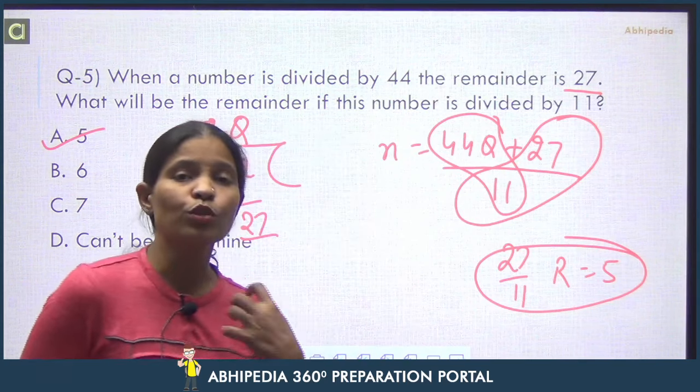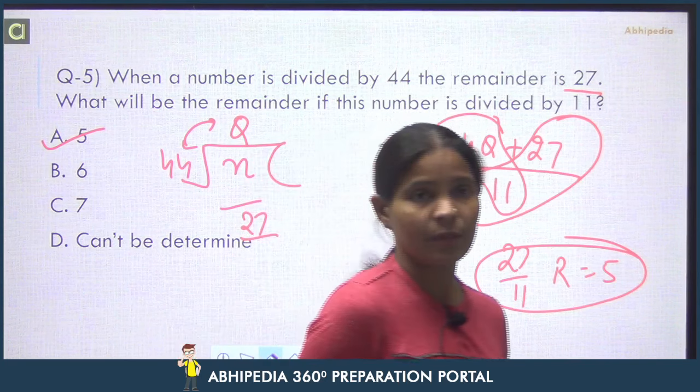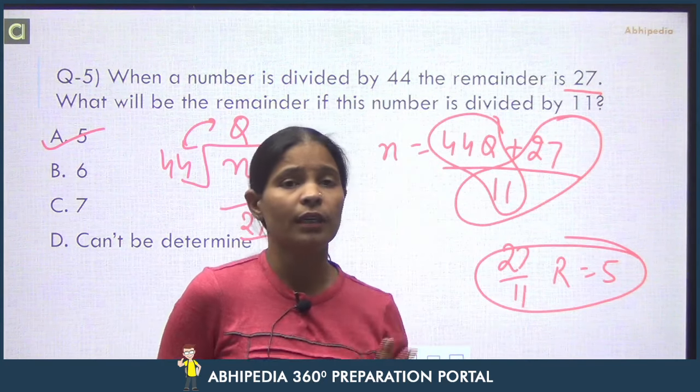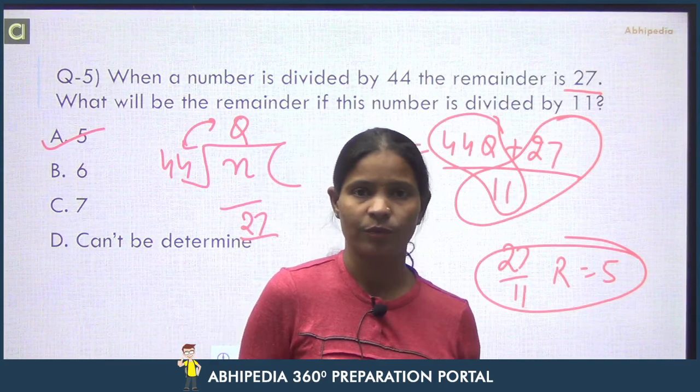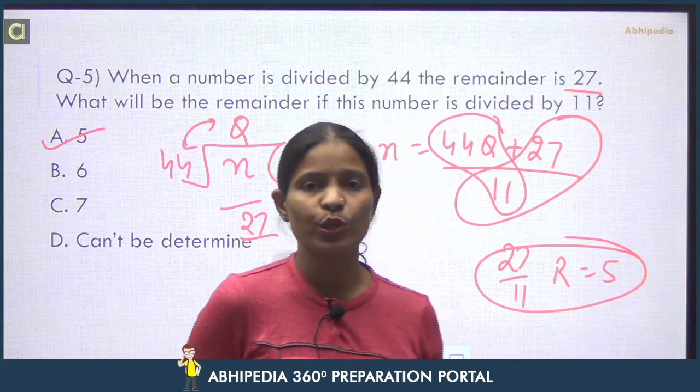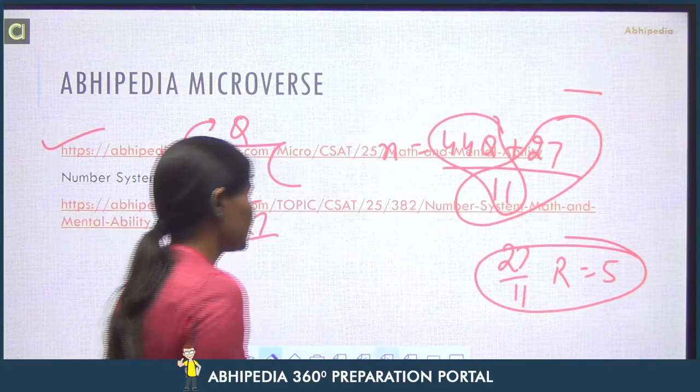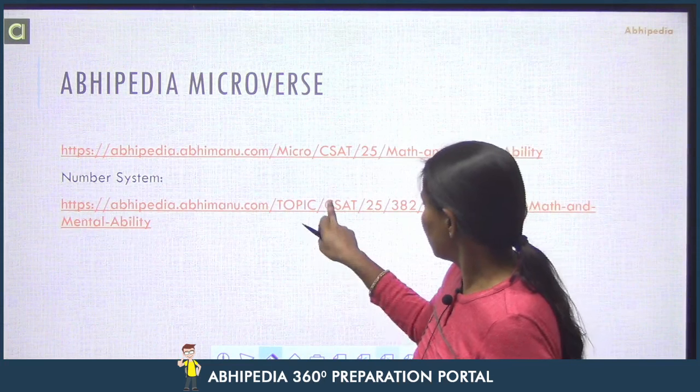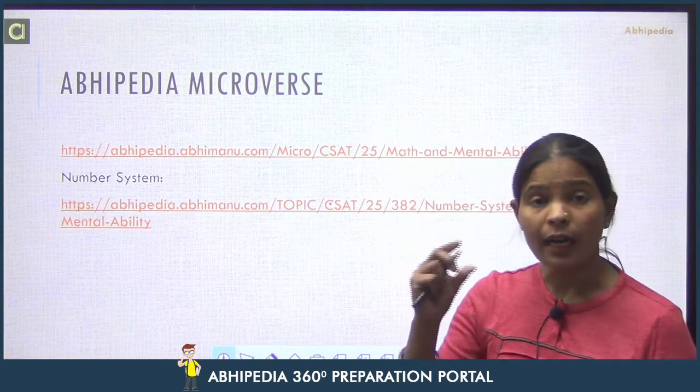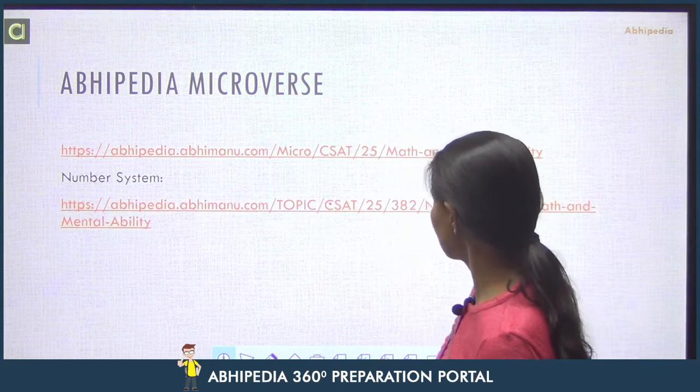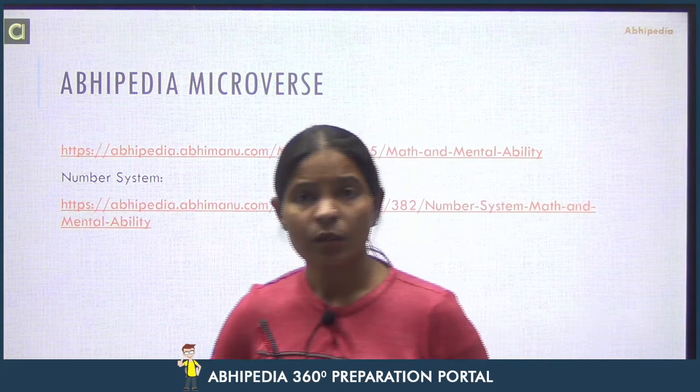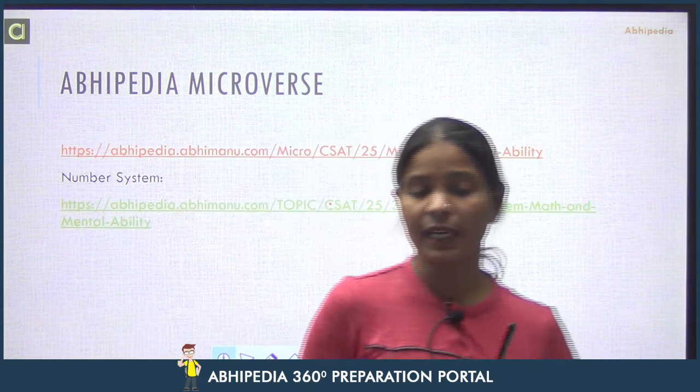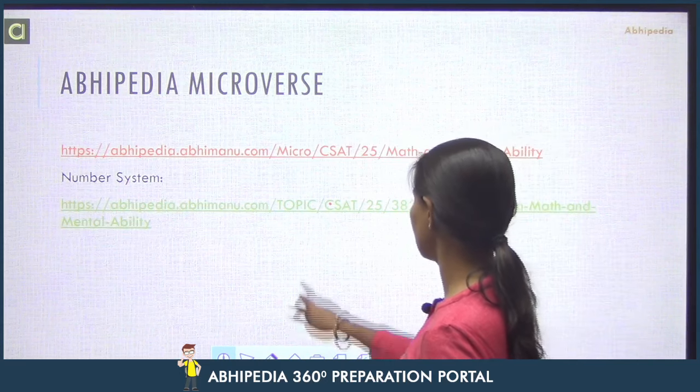Such questions are generally asked in the exam from Number System. We discussed some questions; next 5 questions will be in the next class. Now, we can only discuss some questions; practice is with you. If your concepts are clear, take any book where you get 300-400 questions on Number System and practice them. If you feel you're not getting solutions, you can go to our site where there are Number System micro-courses.